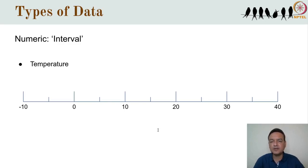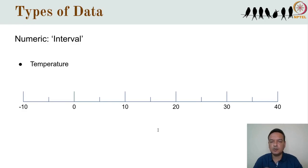It's because interval scale numbers have no true zero. Zero degrees Celsius is just an arbitrary convention — the freezing point of water. If we used a different convention, like assigning zero as the freezing point of alcohol at minus 114 degrees Celsius, then what we now call 20 degrees would actually be 134 degrees. The difference between them remains the same, but the ratio completely changes. Temperature is on the interval scale with no true zero, and therefore ratios of temperatures are not meaningful.